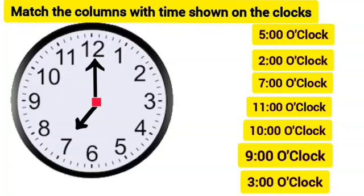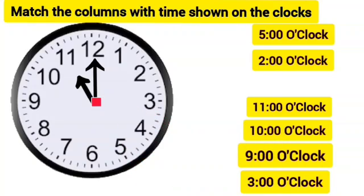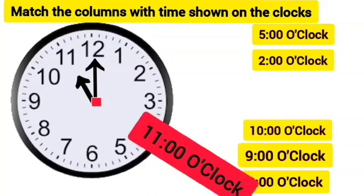In the first clock, the shorter hour hand is on 7 and the longer minute hand is on 12. These needles are showing the time of 7 o'clock. We will match it with 7 o'clock. In the next clock, the shorter hour hand is on 11 and the minute hand is on 12. These needles are showing the time of 11 o'clock. We will match it with 11 o'clock.